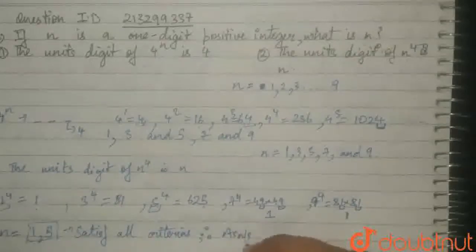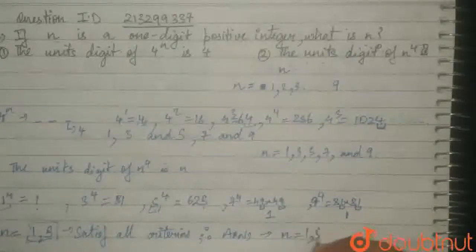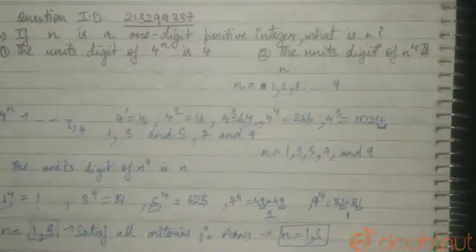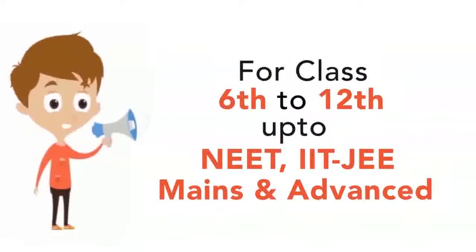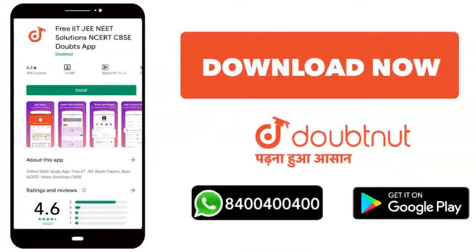Therefore, answer is n equals 1 or 5. And we can take these two values. For classes 6 to 12 up to NEET, IIT-JEE Mains and Advanced, 10 million students trust us. Download the Doubtnet app today or WhatsApp your doubts to 8400-400-400.